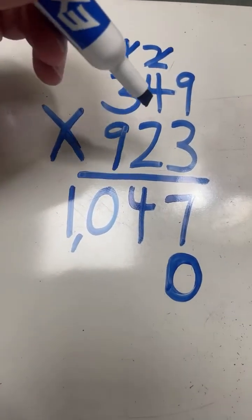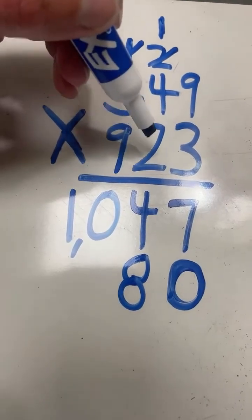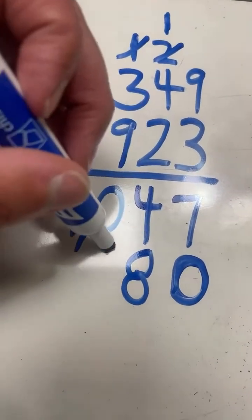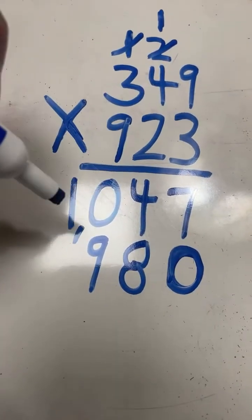9 times 2 equals 18. 8, carry the 1. 4 times 2 equals 8, plus 1 equals 9. We do not need to regroup since our product is less than 10 there. 3 times 2 equals 6.